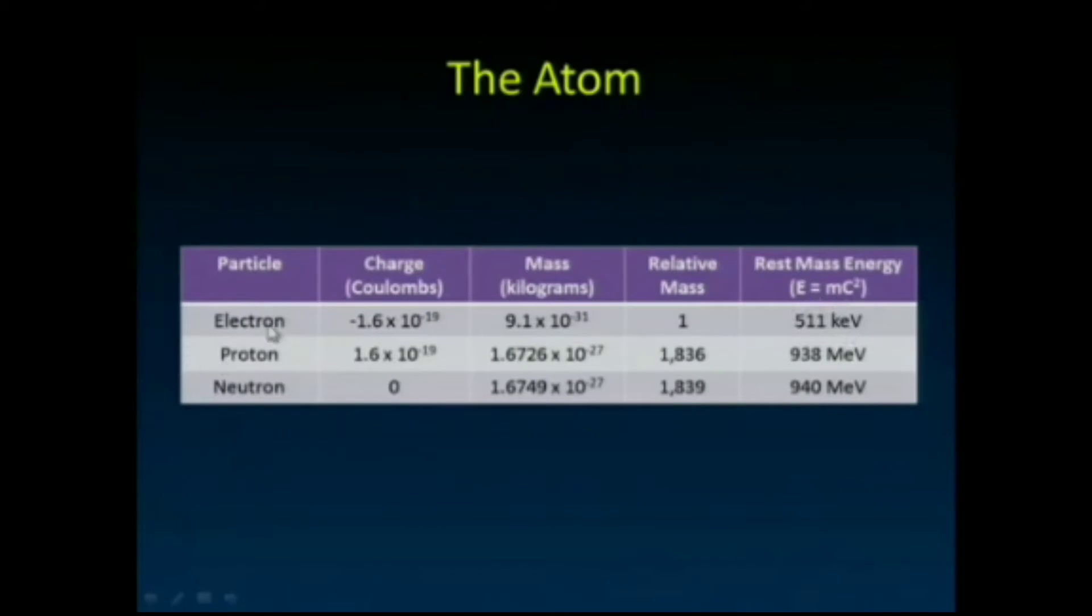I show this again reminding you of the rest mass energy of the electron. If we converted all of its mass to energy, we'd get 511 keV. We're going to see that number pop up when we talk about positron emission tomography, where the positron—the antimatter equivalent of the electron with positive charge but the same mass—annihilates with an electron. We'll convert both of their masses into pure energy and get two 511 keV photons that we're going to use to image.